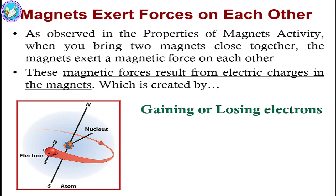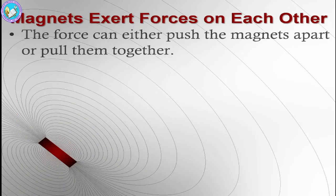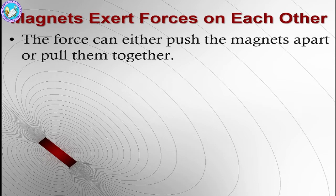Looking at this diagram, the electrons near the north and south pole — when they are rotating together, the nucleus will be at the center of the atom. There might be, if the force has been exerted, it might gain energy of electrons or it may lose energy.